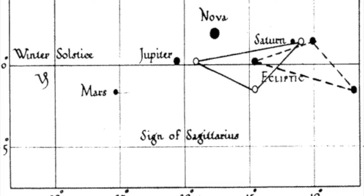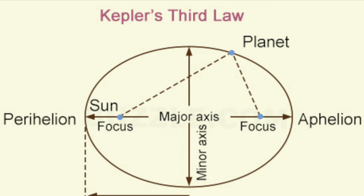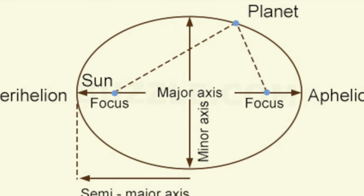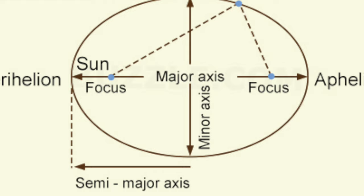Kepler then returned to Germany where he successfully defended his mother against charges of witchcraft. Then in 1619 he published a paper describing his third law, which states that the squares of the orbital periods of the planets must be in proportion to the cubes of their distances from the sun.